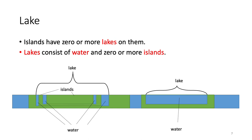Islands may have zero or more lakes on them. Each lake consists of water and zero or more islands. As you can see, an island can have nested islands on it. Please notice that there may be water between the outer island and the inner one. Next, I'll explain how to define the sea and the lakes by using lake symbols.